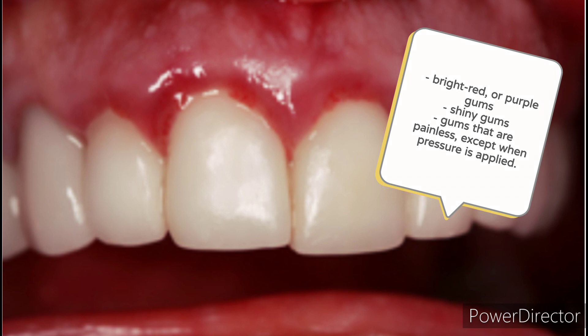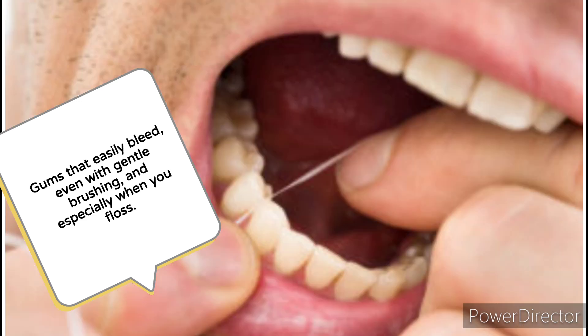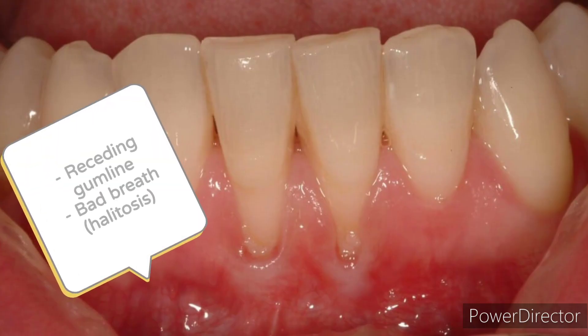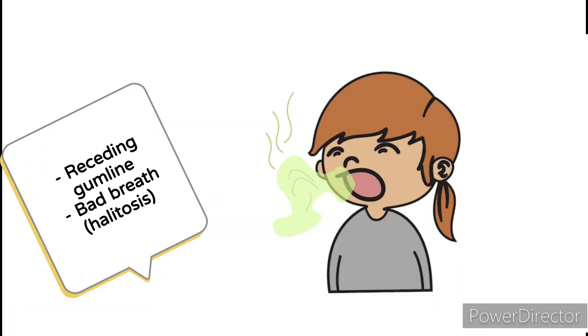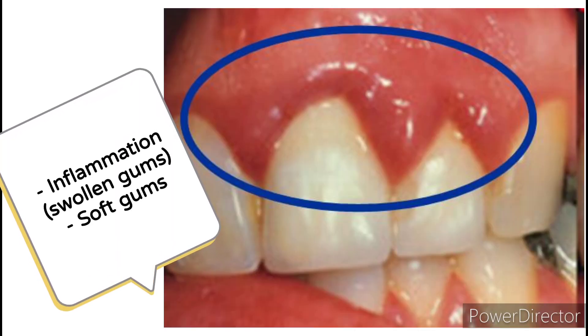Gums that easily bleed even with gentle brushing, and especially when you floss; receding gum line; bad breath or halitosis; inflammation; swollen gums; and soft gums.